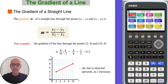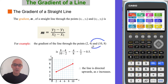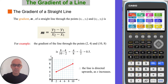In this example, the gradient of the line through the given points, found by calculating y2 minus y1 over x2 minus x1, gives a gradient equal to a half, or 0.5. As this is a positive value, the line is directed upwards as x increases, as shown in the diagram.